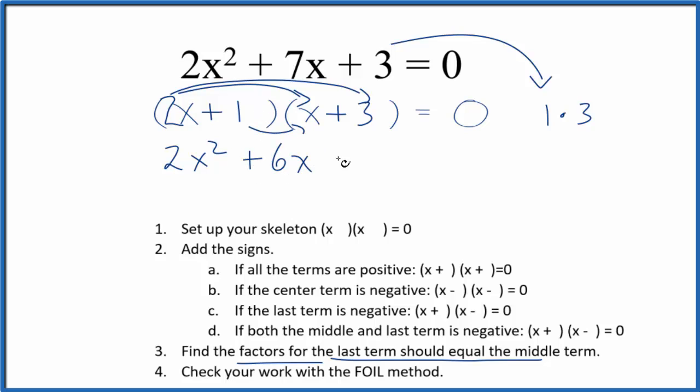Inside terms, 1 times x, that's just x. And the last term, 1 times 3, that gives me 3. All of that equals 0.